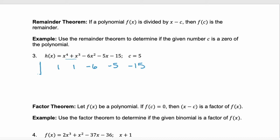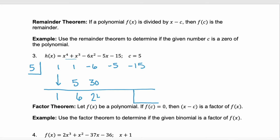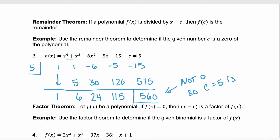That's what the remainder theorem is telling us — is c a zero? So we're going to divide by 5. We draw our bar, and we can add that box at the bottom for our remainder. For c to be a zero, this box needs to end up with a 0. Bring down that first coefficient, 1. Multiply: 5 times 1 is 5. Add vertically: we get 6. Then multiply: 6 times 5 is 30. Add vertically: 24. 24 times 5 is 120. Add vertically: 115. It's not looking good. 115 times 5 is 575. Add vertically: we get 560. That box is not 0, so c equals 5 is not a zero for h of x.